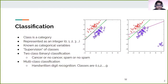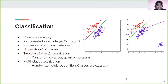In the previous talk about introduction to machine learning, we briefly discussed what is classification. We just have a recap here. In classification tasks, a class is a category. In a dataset, there can be multiple classes, and these classes can also be called categories. These categories are represented as integers such as 0, 1, 2, or 3 or more.